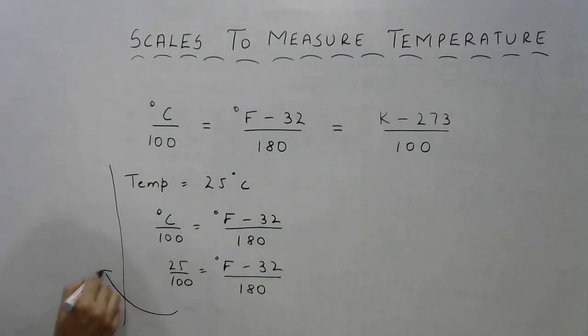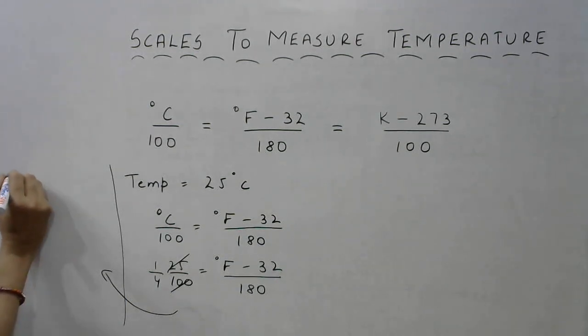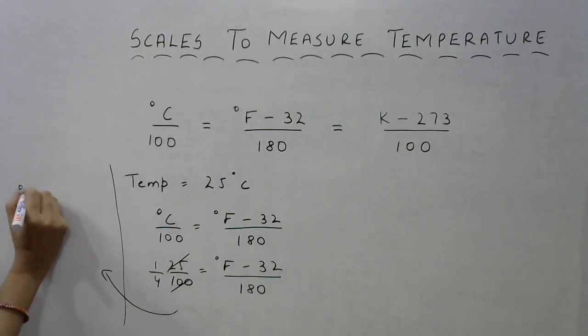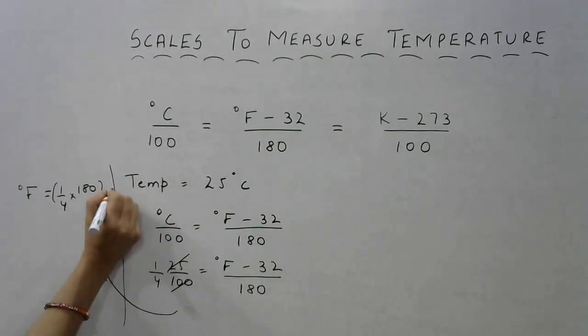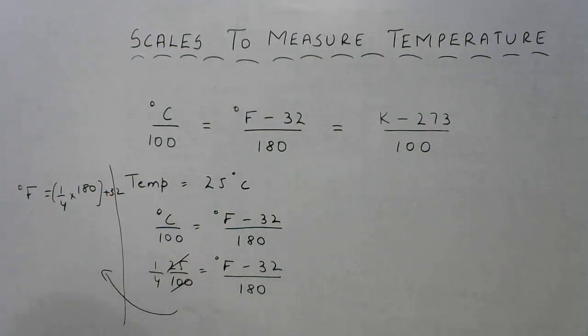I am continuing over here this side. This cancels out and we get 1 by 4 here. So this becomes degrees Fahrenheit is equal to 1 by 4 was already there. We multiplied by 180 and this minus 32 becomes plus 32 over here.